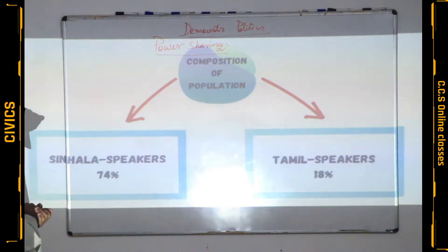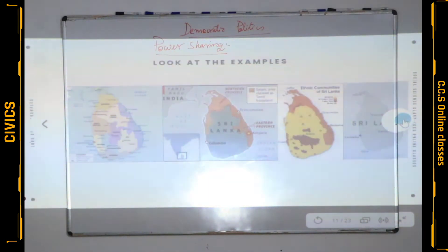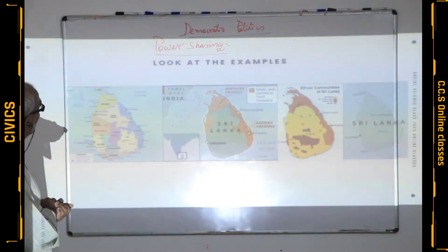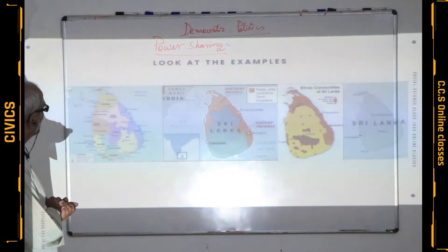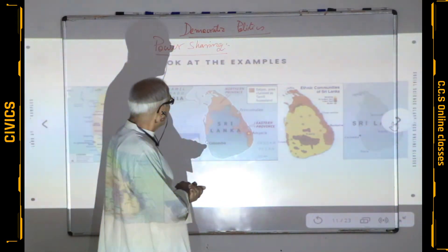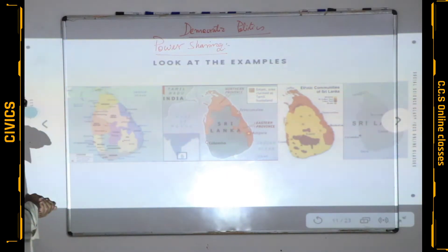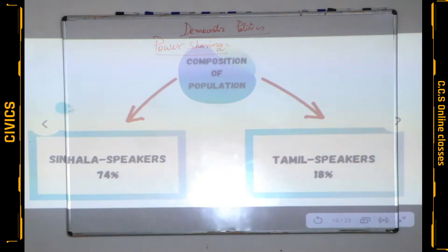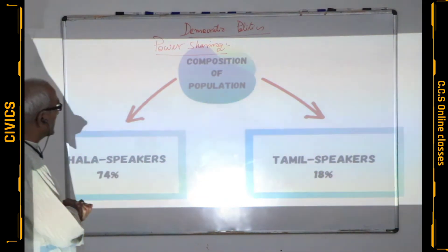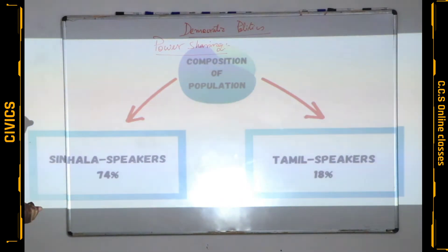Now let us see the social composition of Sri Lanka. Sri Lanka is an island country to the south-east of India in the Indian Ocean. Its social composition: Sinhala speakers 74% and Tamil speakers 18%. So Tamils are in minority and Sinhala speakers are in majority in Sri Lanka.